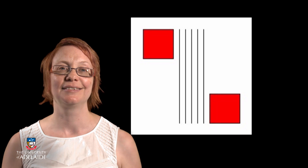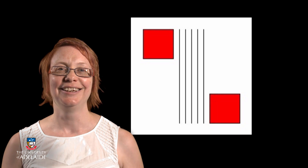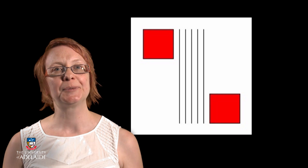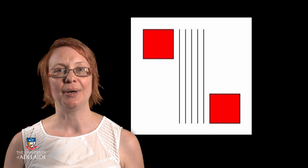Now let's look at a more complex example where we use a flowchart to design the algorithm for a processing program to draw an image that uses repetition. Imagine that we wanted to draw an image that looked like this. Let's first break this down into parts.